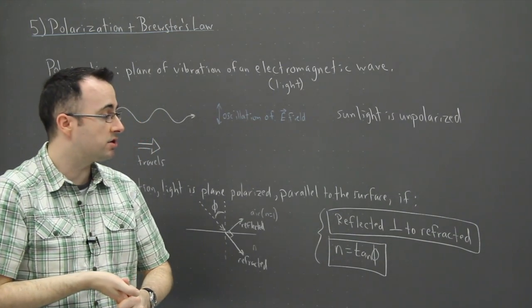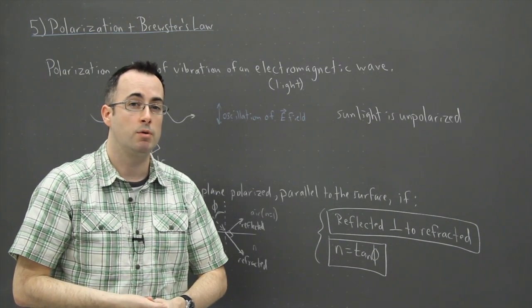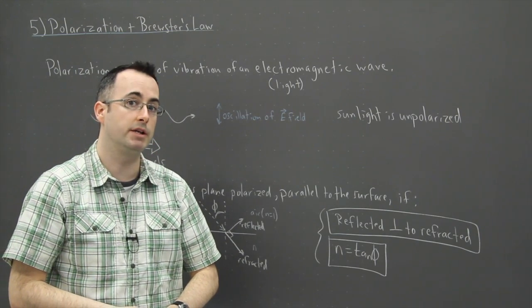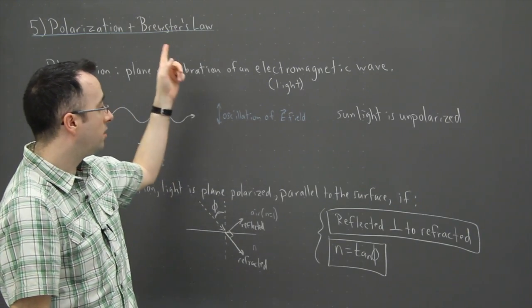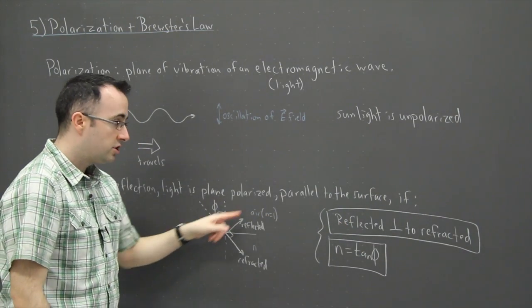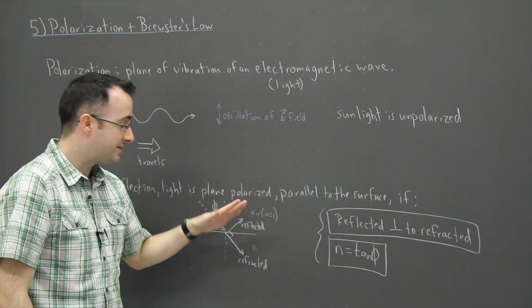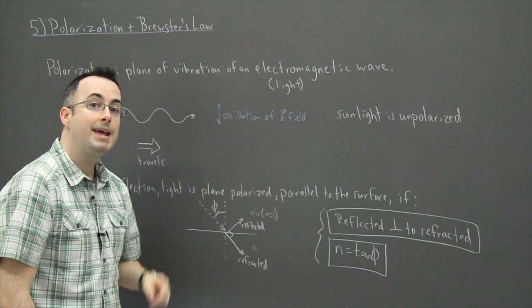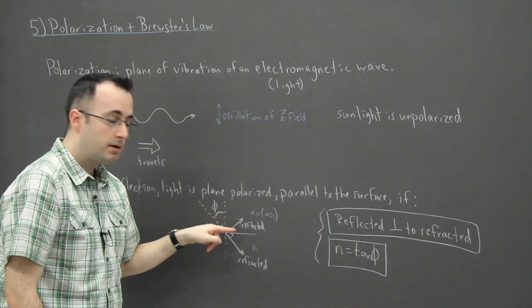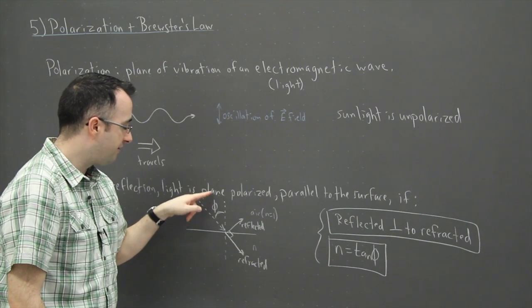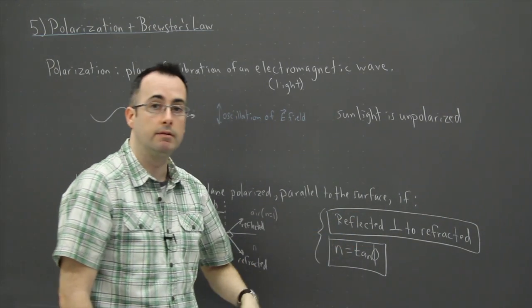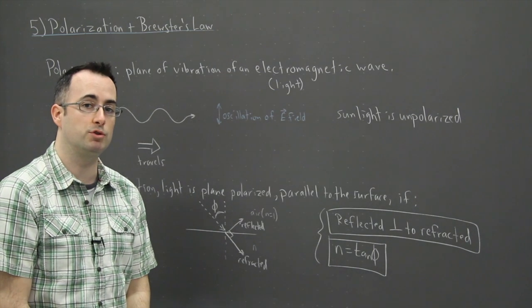The next video, though, is going to be the last one, and I'm going to show you something about what's called Malus's Law. And that one also has to do with polarization, but Brewster's Law is known as this here happening. It says that your light is going to be plane polarized parallel to the surface if your reflected and refracted are at 90 degrees to each other, and if this angle phi right here, where we take the tangent of the angle, it's equal to n. So that's the condition, that's called Brewster's Law.